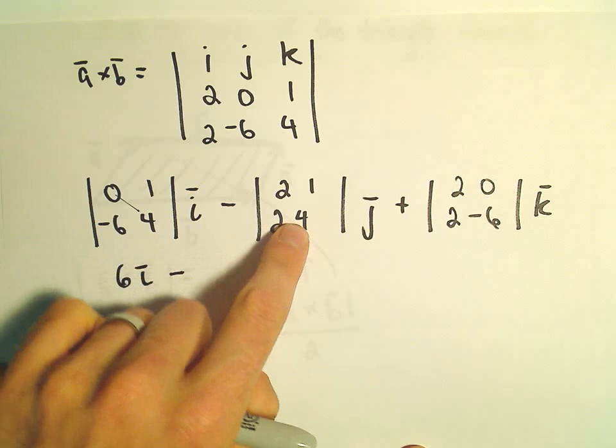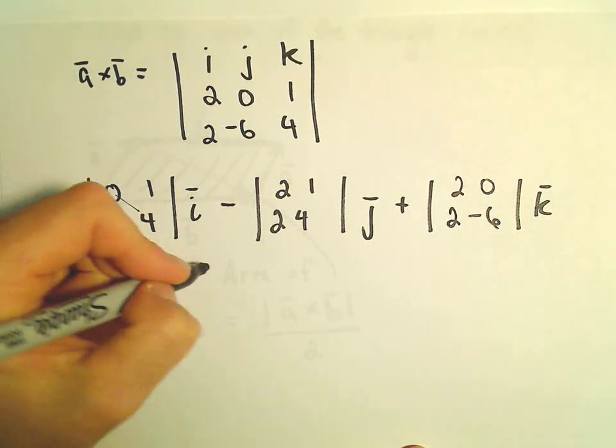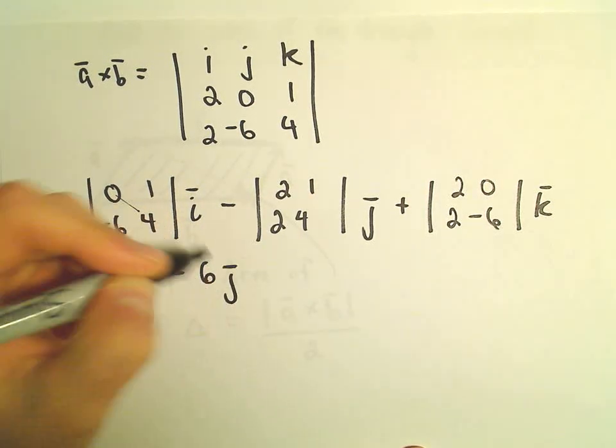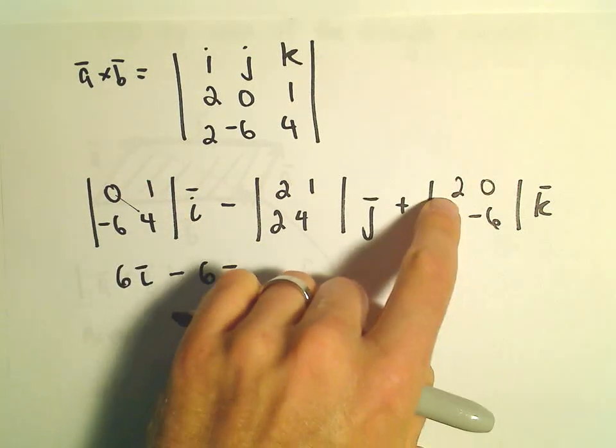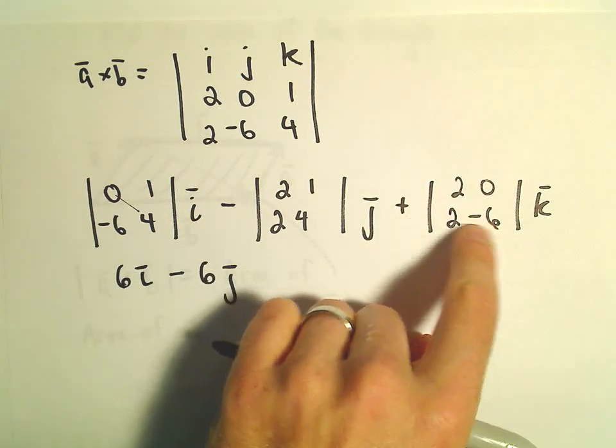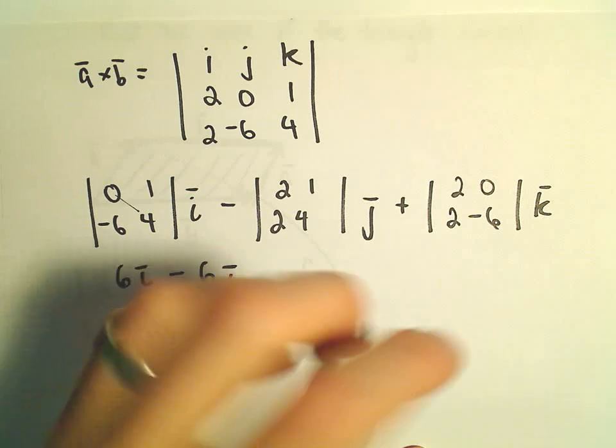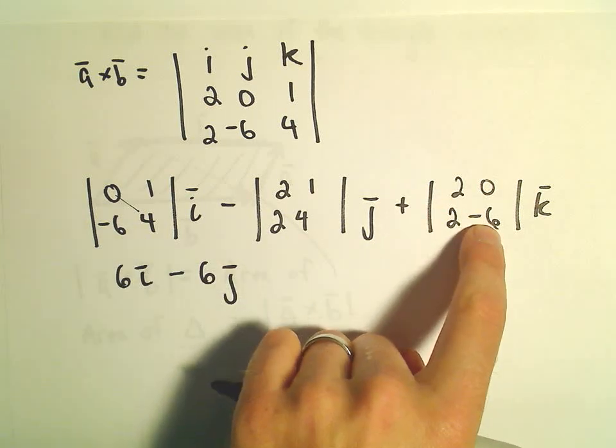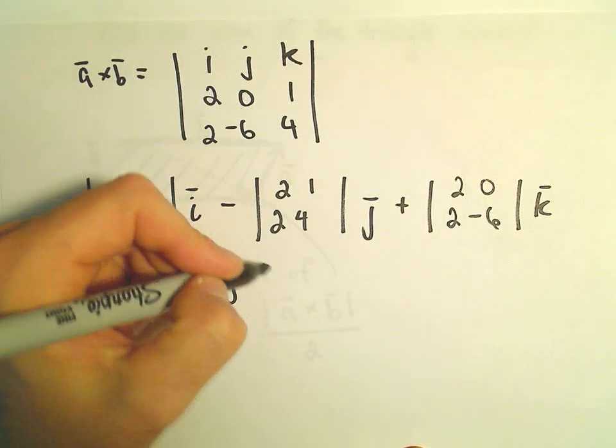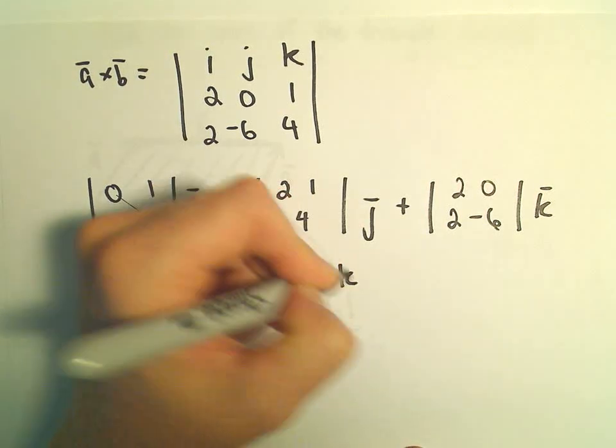Minus, we'll have 2 times 4, which is 8 minus 2. So that'll leave us with a negative 6J. And then it looks like we have negative 12 minus 0. So negative 12 minus 0 is just going to leave us with negative 12 times K.